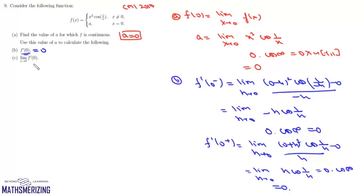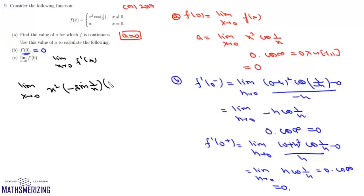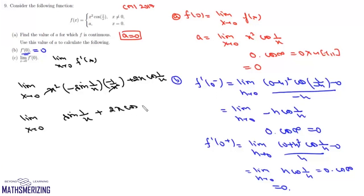Now we evaluate limit x→0 of f'(x). Differentiating f(x) = x²·cos(1/x) gives f'(x) = −sin(1/x) + 2x·cos(1/x) (after the x² cancels). As x→0, 2x·cos(1/x) → 0, but −sin(1/x) oscillates between −1 and +1. So this limit does not exist, meaning f'(x) is not continuous at x = 0.